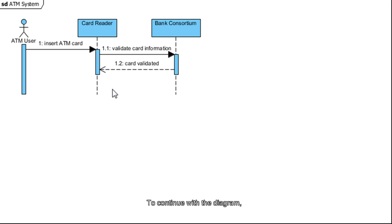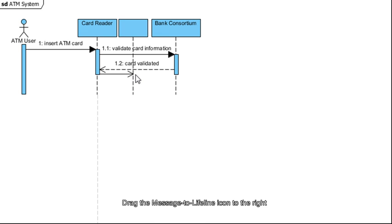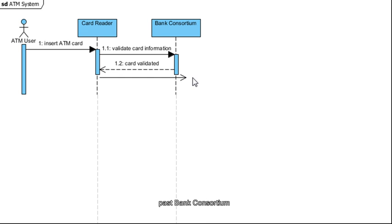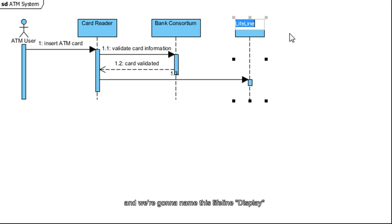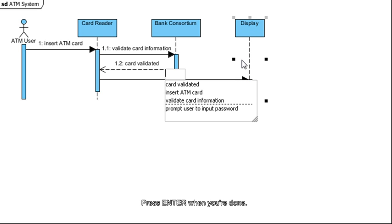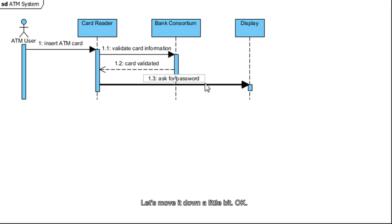To continue with the diagram, select the vertical bar here under Card Reader. Drag the Message to Lifeline icon to the right, pass Bank Consortium to a new location, and then release your mouse. We're going to name this Lifeline Display, press Enter when you're done. And we're going to name this message Ask for Password, then press Enter when you're done.